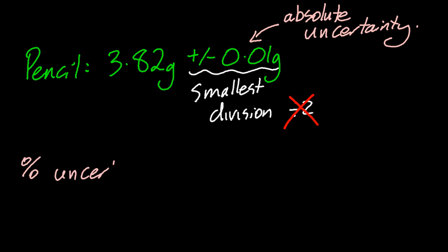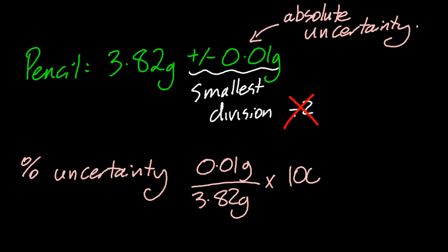The percentage uncertainty, well, take your uncertainty, your absolute uncertainty, divide it by the number you measured, multiply it by 100, and that gives you, to 1 sig fig, 0.3%. I think I'll put my gun back in now.